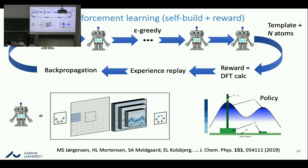The agent is presented with empty space or atoms already placed, and places atoms one by one according to a policy called epsilon-greedy: in most instances it places an atom where it expects the highest reward; in a few instances it places the atom nearby — an explorative move — and in very few instances, completely randomly. At the end it has a complete structure, and we can perform a DFT calculation. The DFT calculation is converted into a reward: if the total energy is low, it's a high reward; if high, a low reward. Then training and backpropagation make the agent more and more proficient.